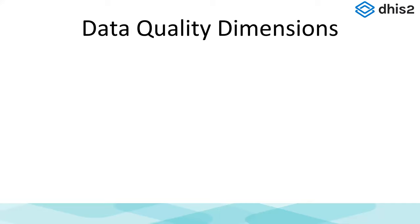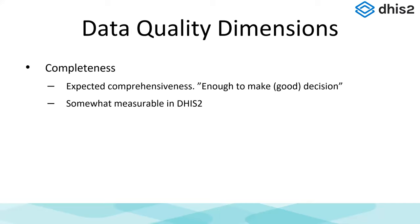Let's quickly cover some of the data quality dimensions. The first one is completeness: did we get all the data in that we needed? Do we have all the health facilities reporting this month? You can't make decisions if you only have, say, 50% of your health facilities reporting every month. You need to have high completeness — all the data coming in that you expect. This is easily measurable in DHIS2.